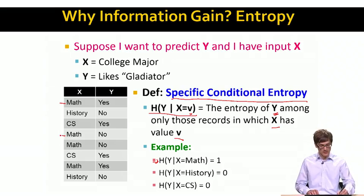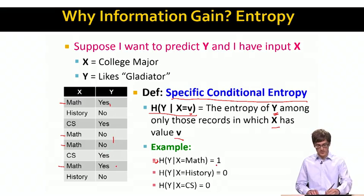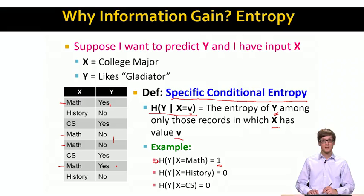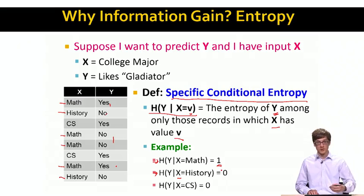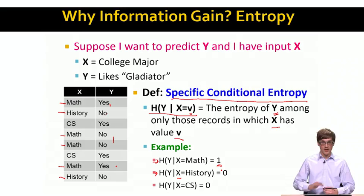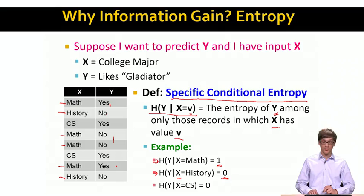That means I only select the rows for which x takes value math. I see that half of them have value yes and half have value no, so using the same calculation as before, the value is 1. I can also ask what's the entropy of y given that x is majored in history. Taking all the history entries, both of them have value no — this is a completely boring distribution. Everything is the same, so historians don't like Gladiator.